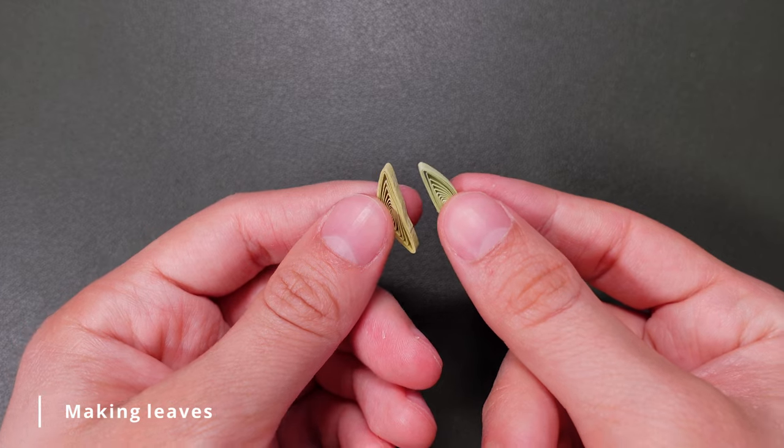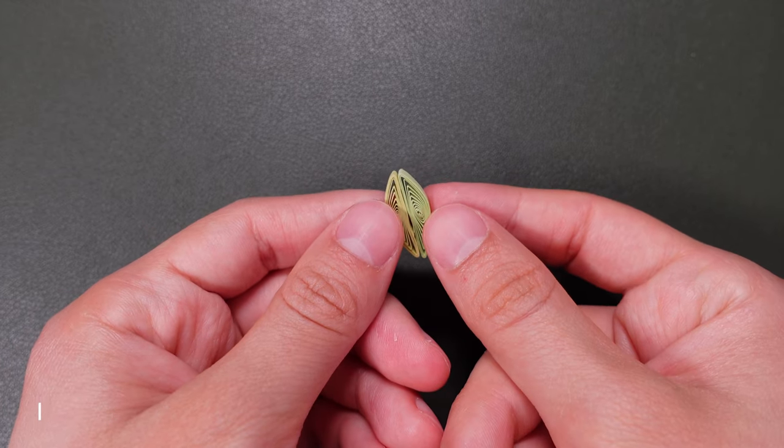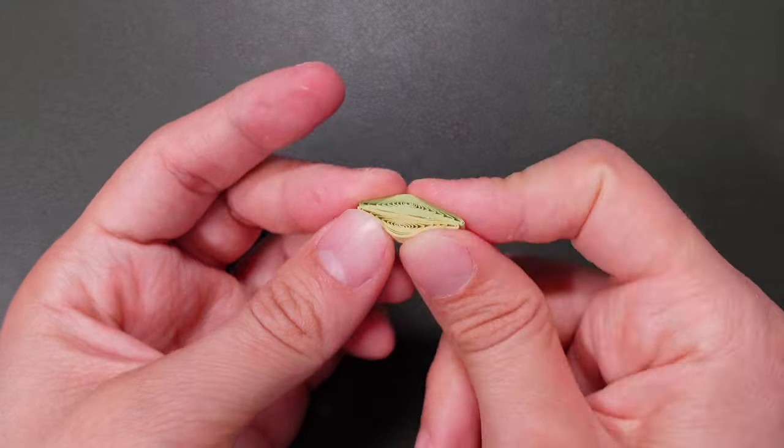I made the leaves of different shapes and sizes as you will see. They are made out of basic loose coils that are pressed and pinched at both ends.